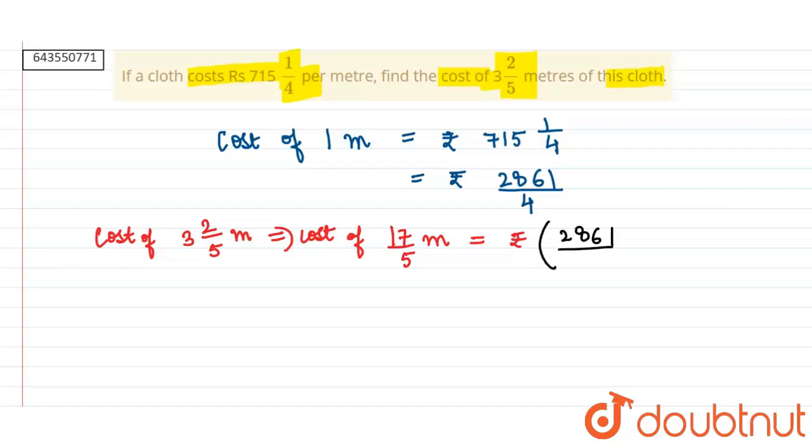This is equal to 2861 by 4 into 17 by 5, which equals 48637 divided by 20, which is equal to 2431.85.